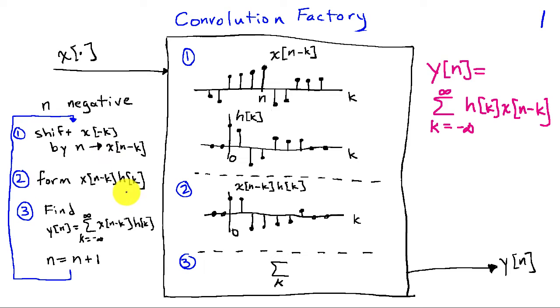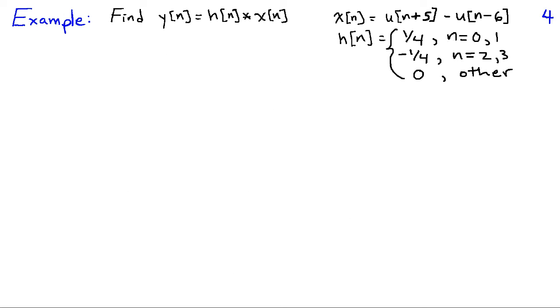Now to get y at another time later, we will then increment n and we'll go back through this process. So we'll shift x, form the product, sum all the values in the product, and then we'll increment n and so on. The example that I want to begin with is we're going to find y as the convolution of h and x.